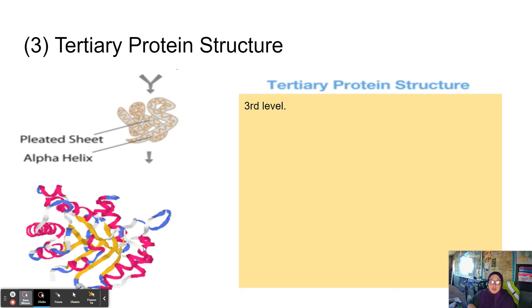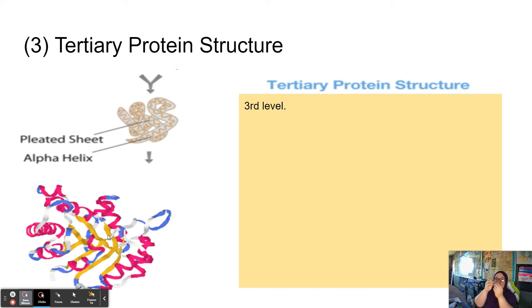The third level is called the tertiary protein structure. At this level, the pleated sheets, alpha helixes, and amino acid chains start to fold together — linking and binding into a three-dimensional shape.